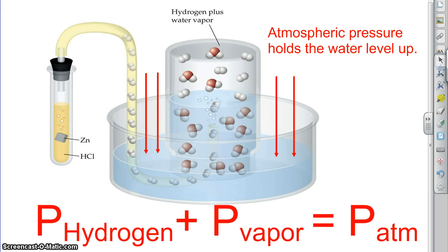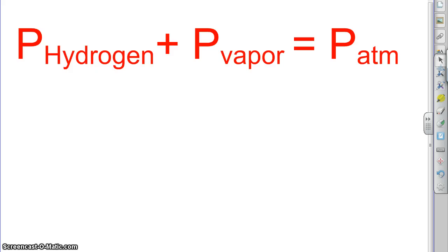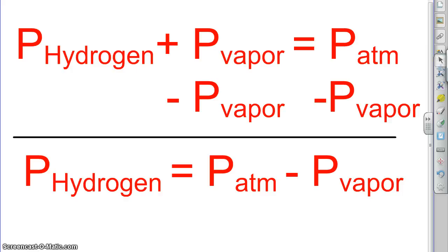And so we would need to know the temperature to do this. Let's just kind of make up some examples. What we're going to do is take the formula we just had and solve to get the hydrogen pressure by subtracting off the vapor pressure. And that tells us to get the hydrogen pressure we would take the atmospheric pressure minus the vapor pressure of water. And that's how we would do it.